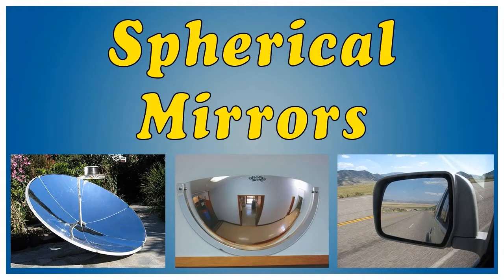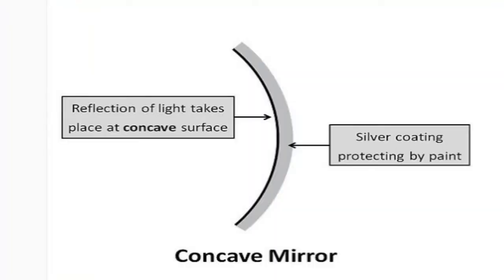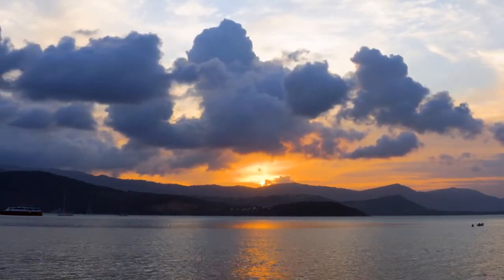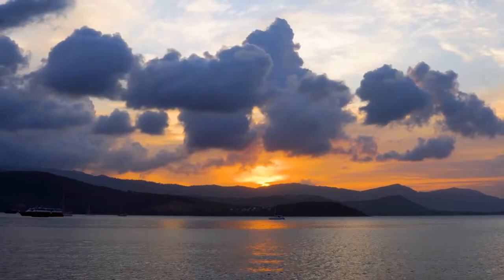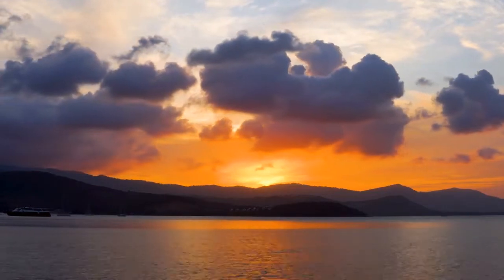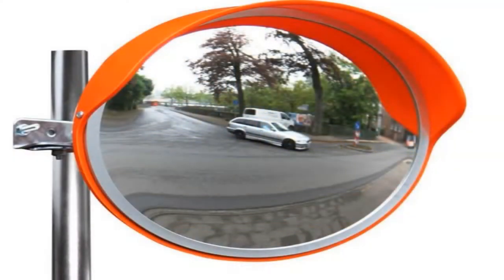Next topic is the spherical mirror. A spherical mirror whose reflecting surface is curved inwards, that is, faces towards the center of the sphere, is called a concave mirror or converging mirror. A spherical mirror whose reflecting surface is curved outward is called a convex mirror or diverging mirror. Before we move further, we need to recognize and understand the meaning of a few terms commonly used in discussions about spherical mirrors.